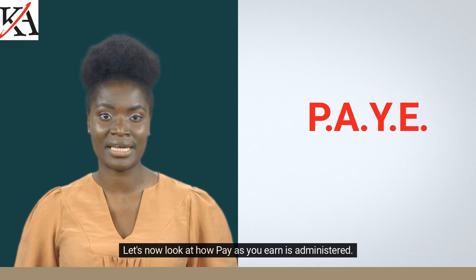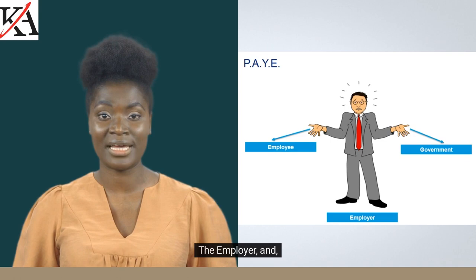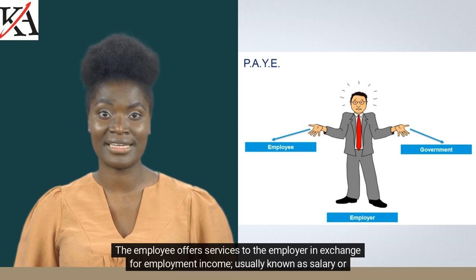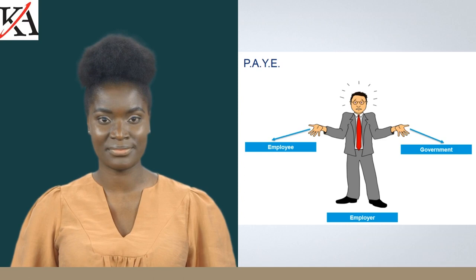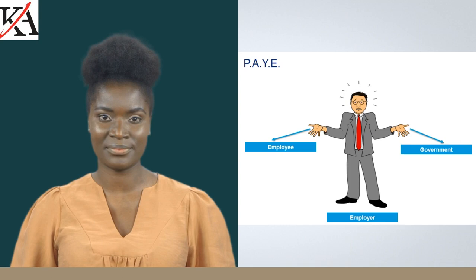Let's now look at how pay-as-you-earn is administered. There are three main players in pay-as-you-earn: Kenya Revenue Authority, the employer, and the employee. The employee offers services to the employer in exchange for employment income, usually known as salary or wages. The employer deducts PAYE from the employee and remits it to Kenya Revenue Authority. Kenya Revenue Authority collects tax on behalf of the government.